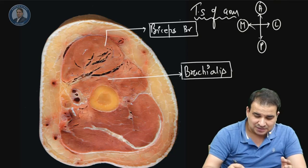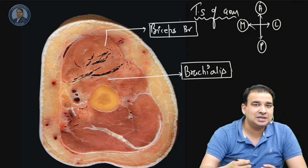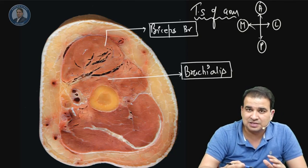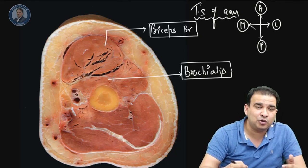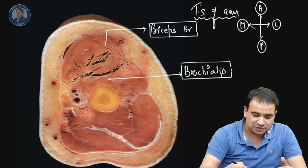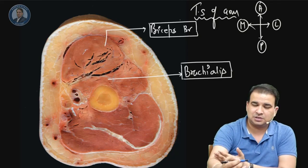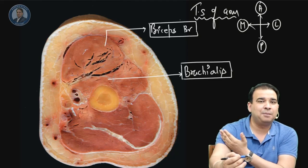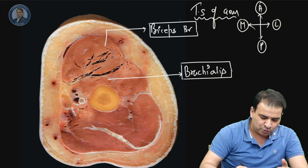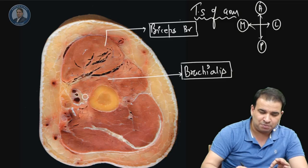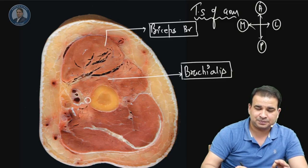Coracobrachialis is not seen in this section. If it were a section from the upper half, coracobrachialis would be visible, inserted onto the medial side of the humerus.